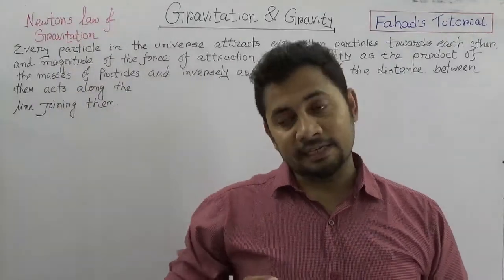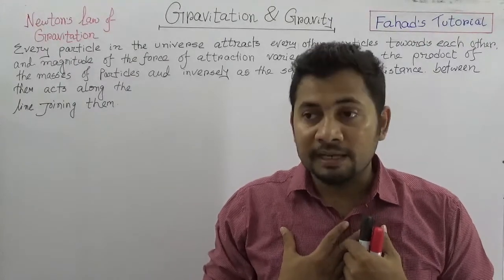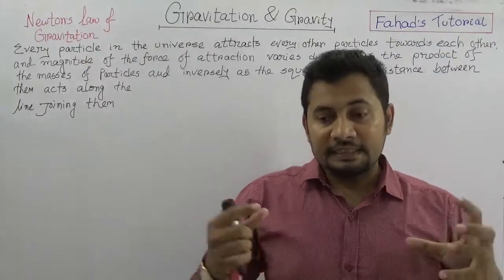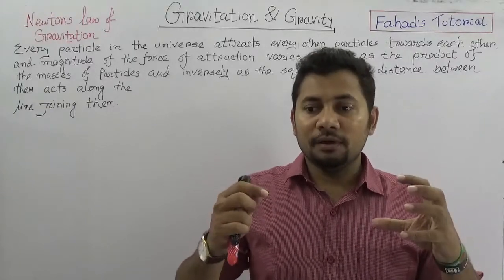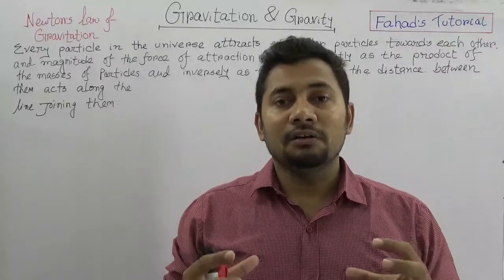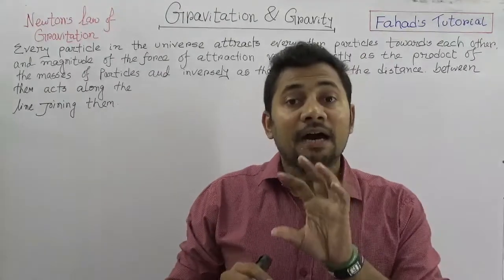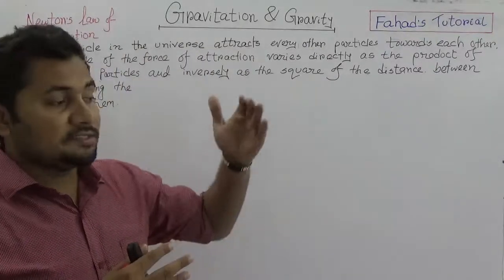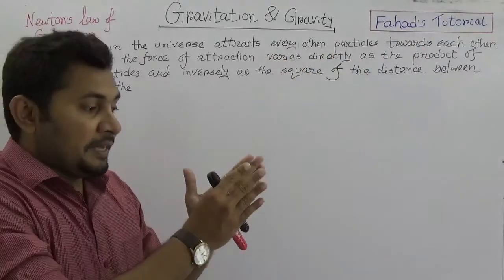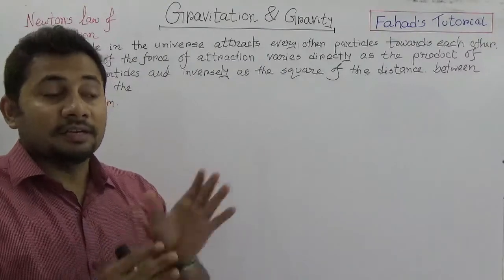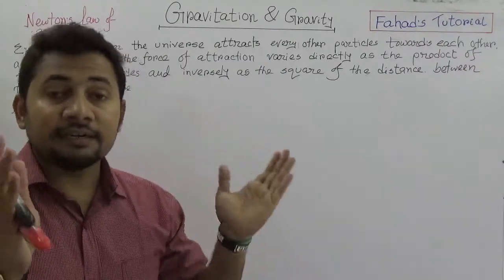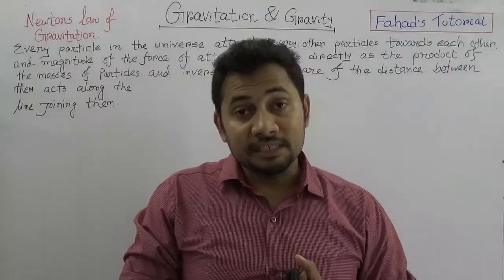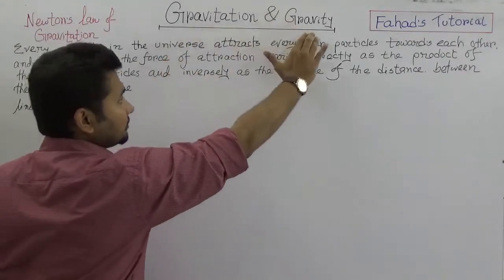It is important to understand that we have mass. If we did not have mass, we would be thrown into space. Every single object in this entire universe attracts each other, and this attraction is called gravitation. If one of them is Earth — like in the solar system, the planets are attracting each other, suns and moons are attracting each other, Planet Earth and moons attracting each other — every single body in this entire universe attracts each other, and this attraction force is known as gravitation. So this is gravitation, and this will relate to gravity.